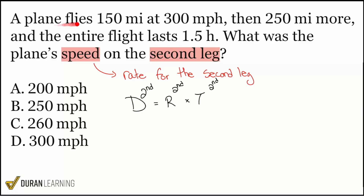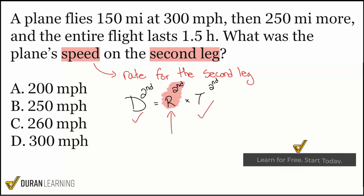Now let's see if these pieces of information can be found in the problem. Given that we're looking for rate, I'll mark that. If we find the distance but don't have the time, we're going to have to find a way to get the time, because once we have the time we can calculate for the rate.